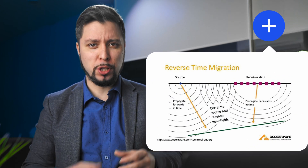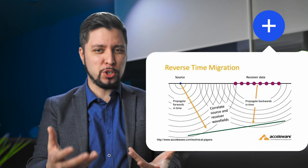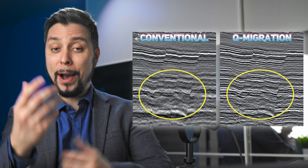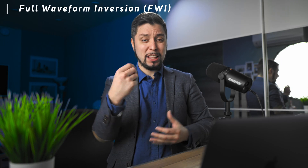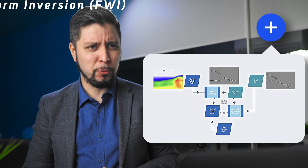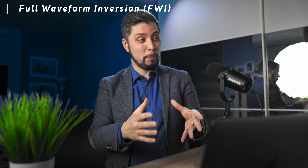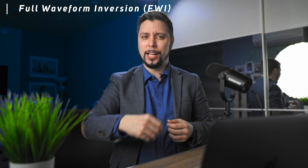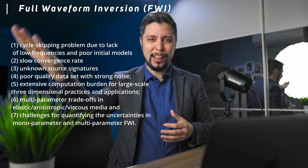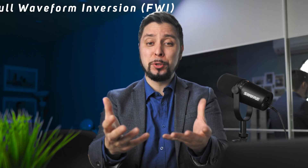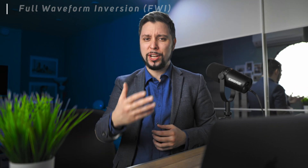Moving on to analytical methods: migration is a technique that corrects the distortion of seismic waves as they travel through the subsurface, resulting in higher resolution and more accurate images. There are different types of migration, and here is an example of how different methods might affect seismic resolution. Full waveform inversion (FWI) is an advanced technique that uses the entire seismic waveform to reconstruct high-resolution subsurface properties. However, due to the ill-posed problem and non-uniqueness of the inverse problem, large-scale practical applications face significant challenges. FWI is computationally intensive but can greatly improve resolution and accuracy.